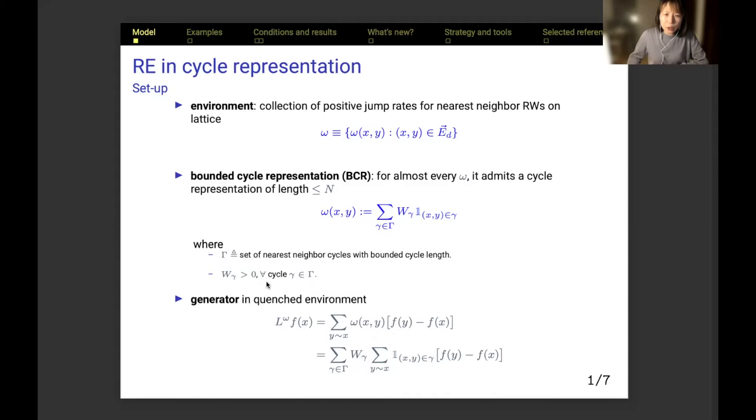Correspondingly, the quantity generator when applied to some lattice function f is the sum of positively weighted increments of nearest neighbor jumps. The weight is the edge jump rate. With the cycle structure, it can be exchanged for a sum of selected cycle weights.